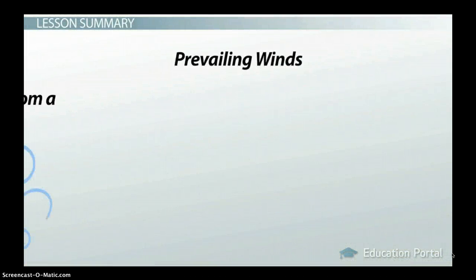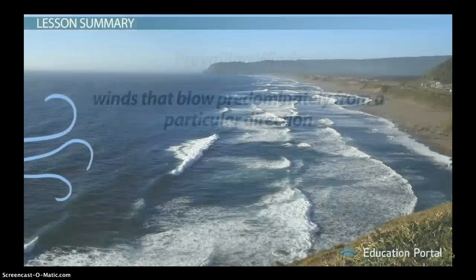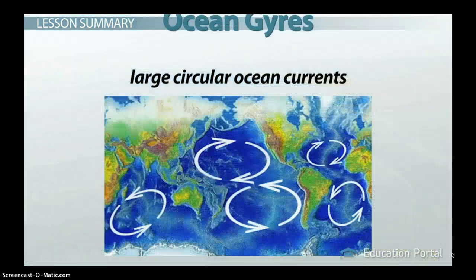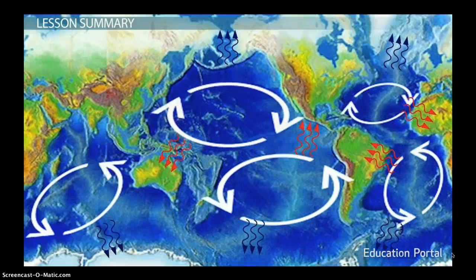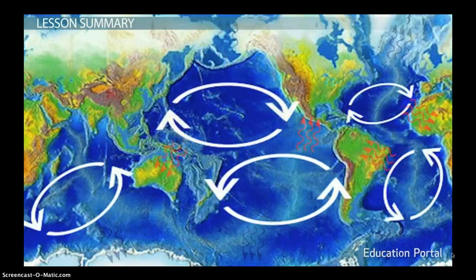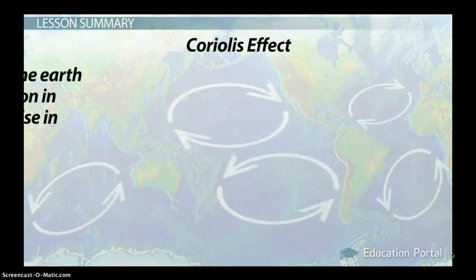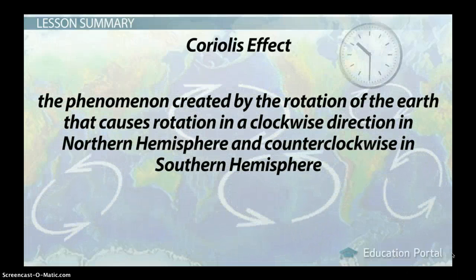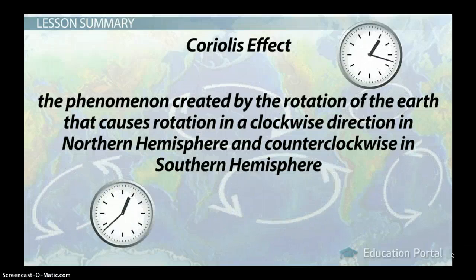Let's review. Prevailing winds, which are winds that blow predominantly from a particular direction, flow across the ocean surface pushing the water in large circular ocean currents called ocean gyres. The circulating waters transfer heat to the air, which affects the climate of nearby land masses. The gyres are directed by the Coriolis effect, which is the phenomenon created by the rotation of the Earth that causes rotation in a clockwise direction in the Northern Hemisphere and counterclockwise in the Southern Hemisphere.